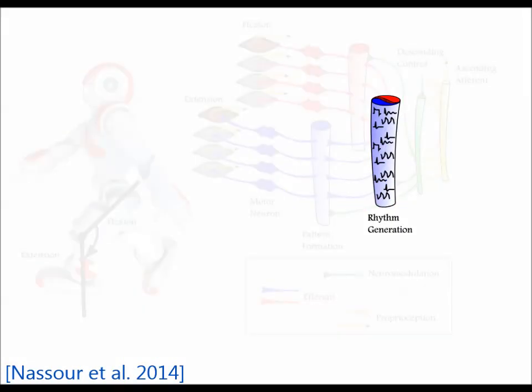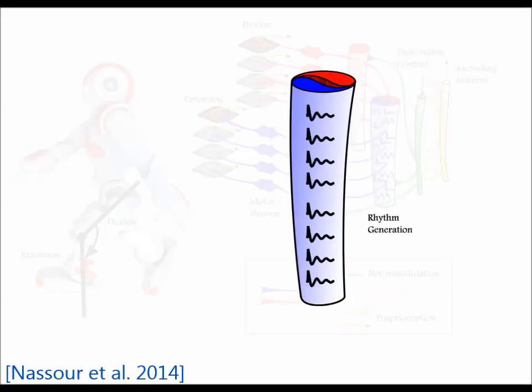In the rhythm generation layer, different types of patterns can be generated according to the descending control: oscillation patterns, alternating oscillation patterns, plateau patterns, and quiescent patterns. Different patterns can also appear on different joints at the same time.